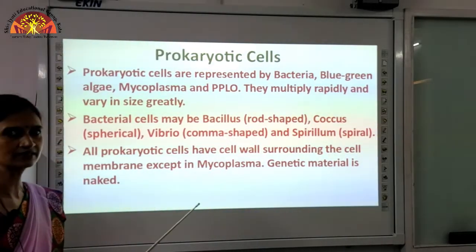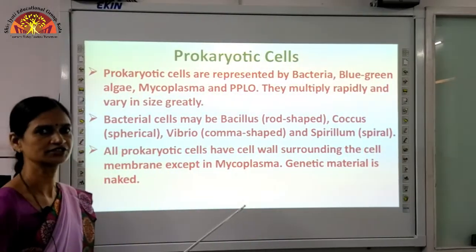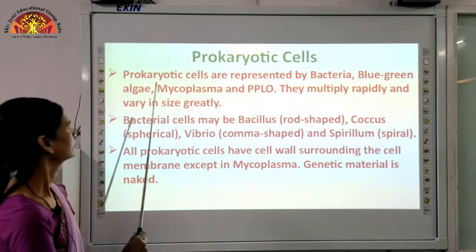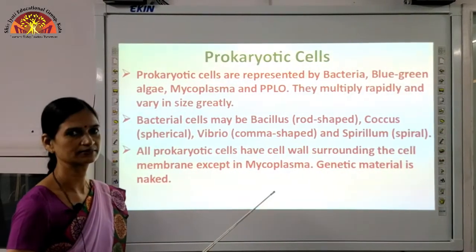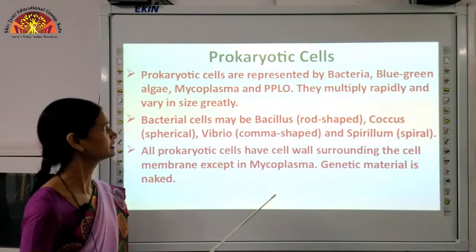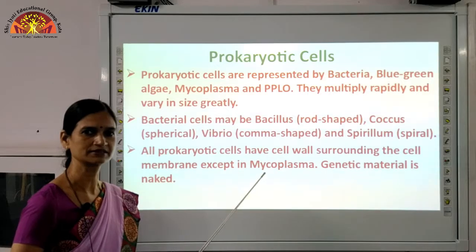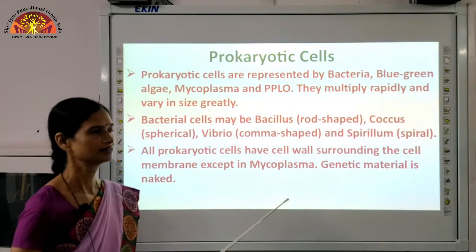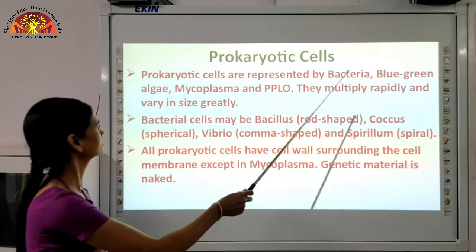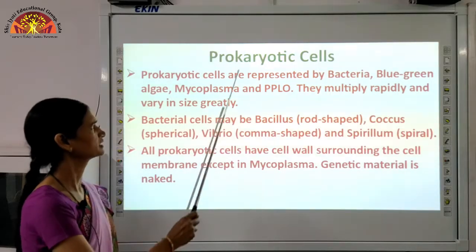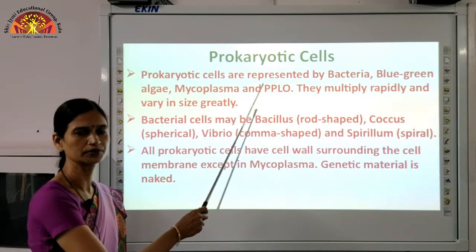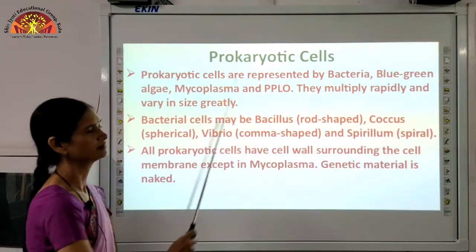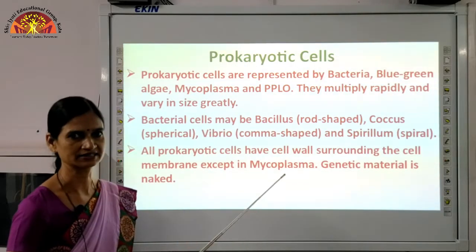Now we will see the features and characteristics of prokaryotic cells. Prokaryotic cells are represented by bacteria, blue-green algae, mycoplasma, and PPLO — Pleuropneumonia-like organisms. These are the prokaryotic cells. Generally we study bacterial cells as our example of prokaryotic cells. They multiply rapidly and vary greatly in size.